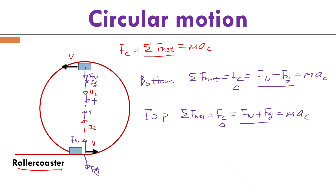Centripetal force at the top comes from normal force plus gravity, while at the bottom it's normal force minus gravity. Pay attention — there is a minus sign at the bottom and a plus sign at the top. Normal force and gravity are real forces with a physics origin, but centripetal force is just the net external force pointing to the center.